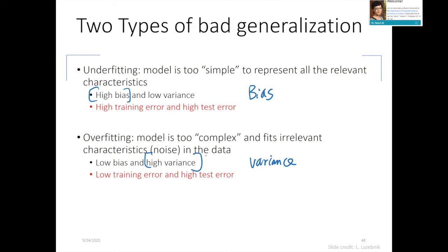We talk about two types of bad generalization. Bad generalization is caused by bias, variance, or essentially the sum of both — but sometimes bias dominates and sometimes variance dominates. When bias dominates, that's the underfitting case. When variance dominates, that's the overfitting case. These are the two types of bad generalization.